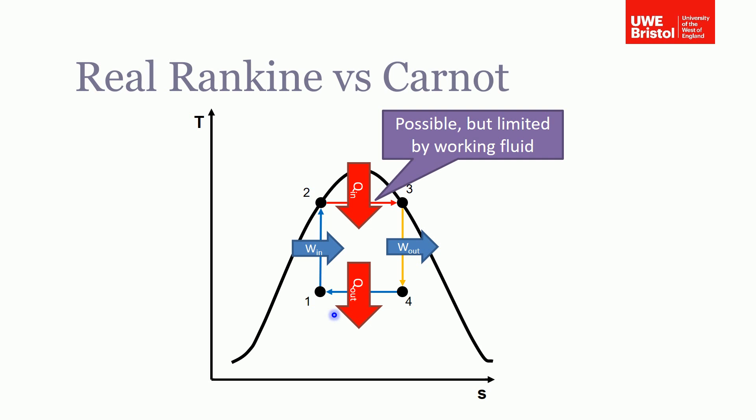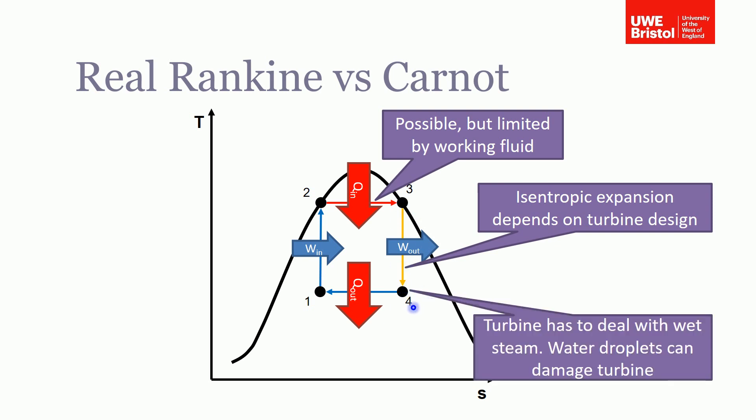One of the main reasons we can't use this is the fact that we assume that the work out is an isentropic process as we're expanding the steam. That depends on the turbine design, and not all turbines are going to have an isentropic efficiency of 100% - in fact, around 80% is typical. So that can never be true in practice.